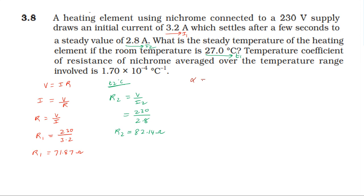The temperature coefficient of resistance alpha equals R2 minus R1 divided by R1 into T2 minus T1. Rearranging, T2 minus T1 equals R2 minus R1 divided by alpha times R1. So T2 minus T1 equals 82.14 minus 71.87 divided by 71.87 times 1.7×10^-4.